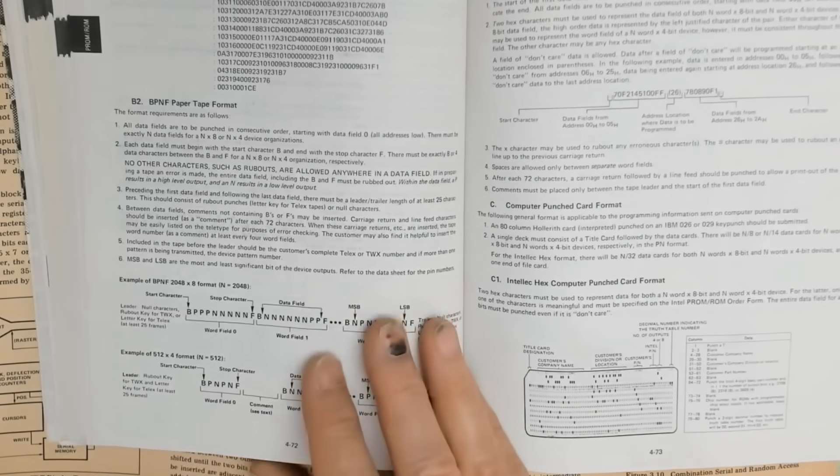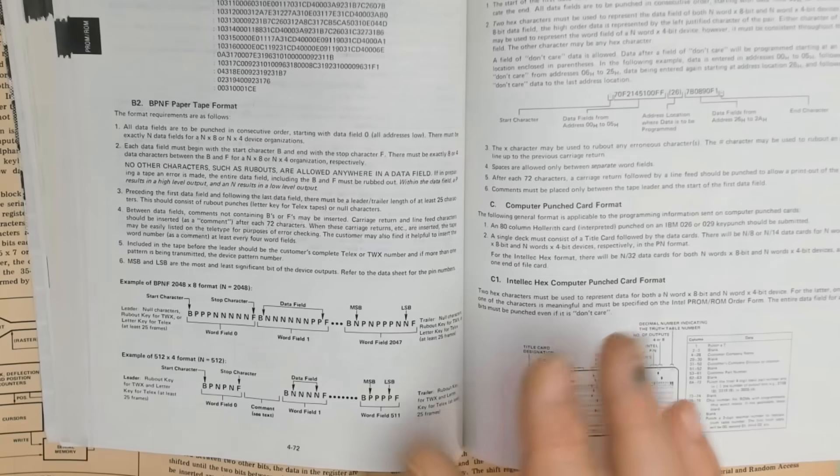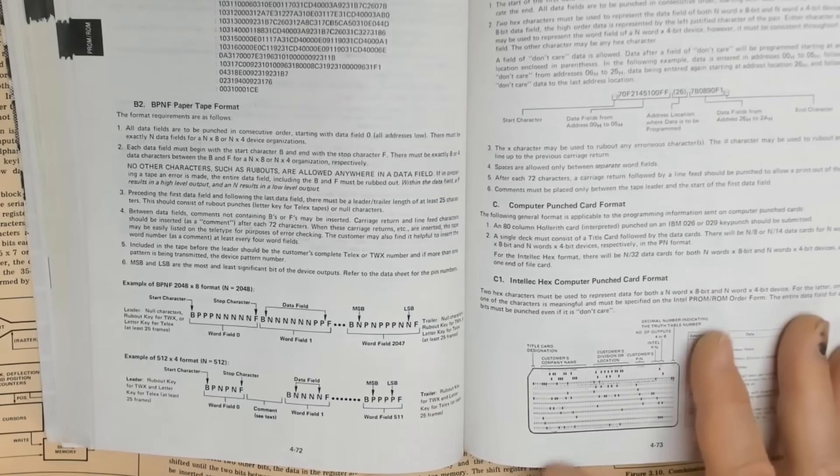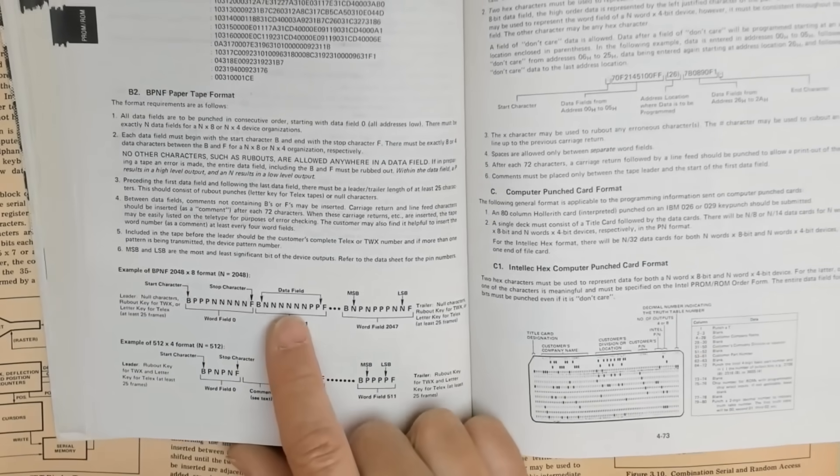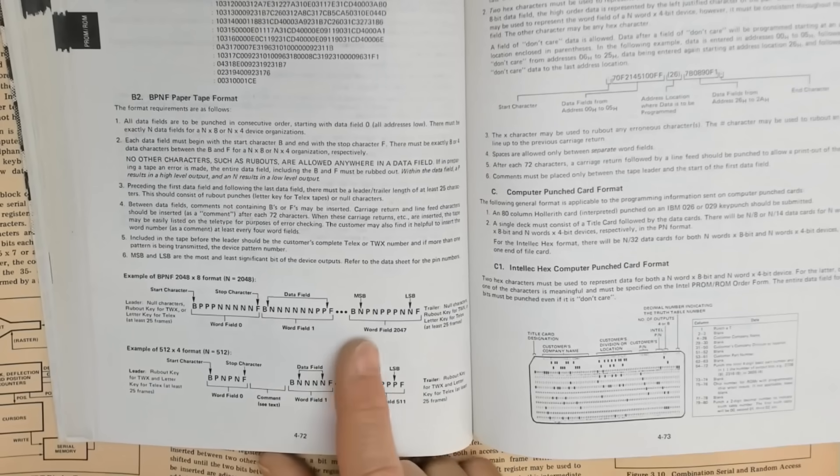Binary object files were better for programming and data transfer because even at that time, object code had a mechanism to move the destination memory pointer. Now BPNF, it's a text-based file, usually ASCII, but for some period of time, Intel did allow customers to send in 5-bit BAUDOT code.